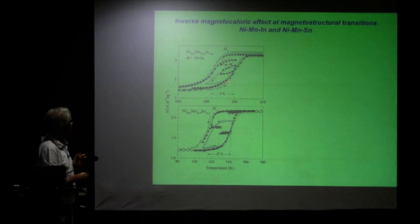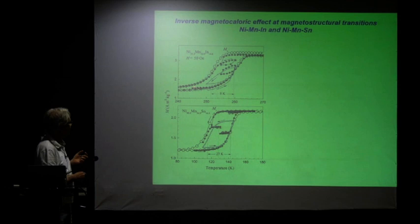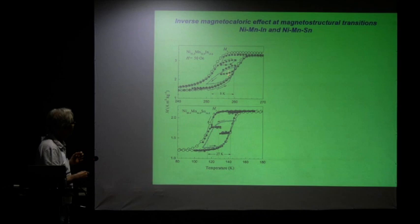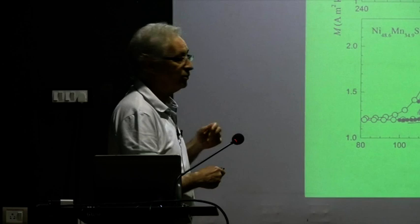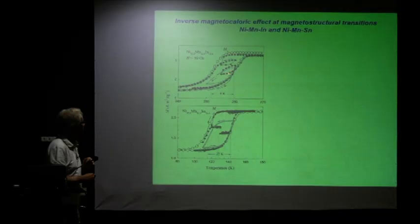We increase the temperature further and come to this loop over here. We start decreasing the temperature. If we were to go back up, it would have followed a curve something like this. But as we go down in temperature and cross the martensite transition temperature — the Ms temperature somewhere around here — if we cross it, then it is possible to change the state of the system again. We're changing the state of the system. Anytime you're changing the state of the system, you're causing an entropy change.